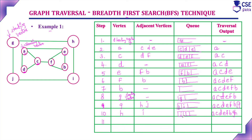The next vertex in the queue is J. We visit vertex J and its adjacent vertex is I, which has been included in the queue but not yet visited. I is already in the queue, so no new insertion is needed. The traversal output is now A, C, D, E, F, B, G, H, J.